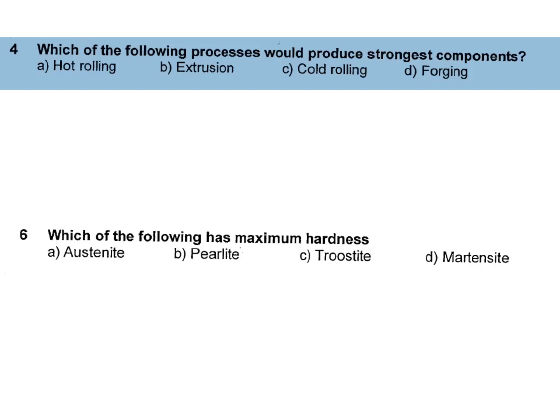Which of the following processes would produce strongest component? a) Hot rolling, b) Extrusion, c) Cold rolling - cold rolling is stronger than hot rolling, d) Forging. Forging is the strongest. Examples of forging parts are connecting rod and oil field equipment, valves component, high pressure valve components.